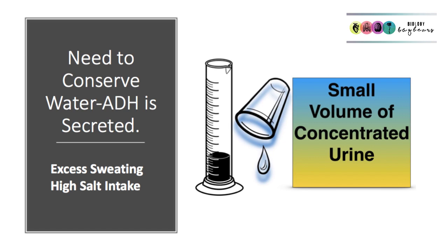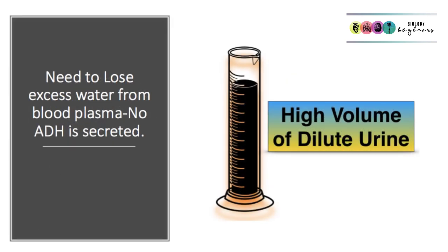When your blood plasma has too much water, or you've drunk a lot of water, no ADH will be secreted. This means no extra water will be reabsorbed and you will produce a high volume of very dilute urine.